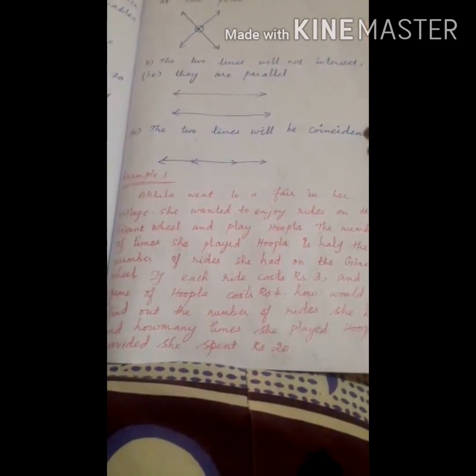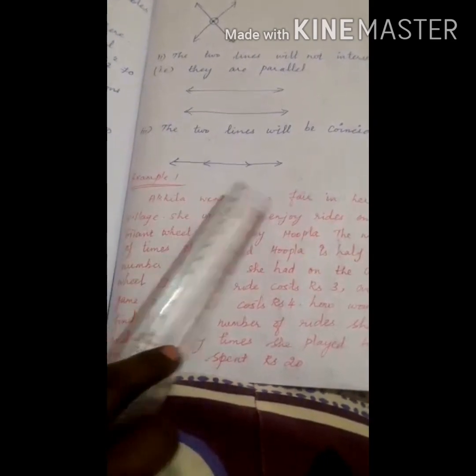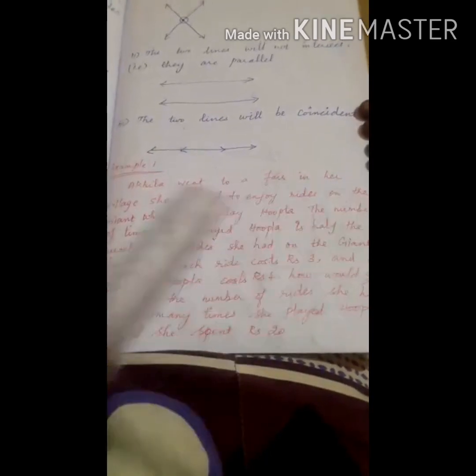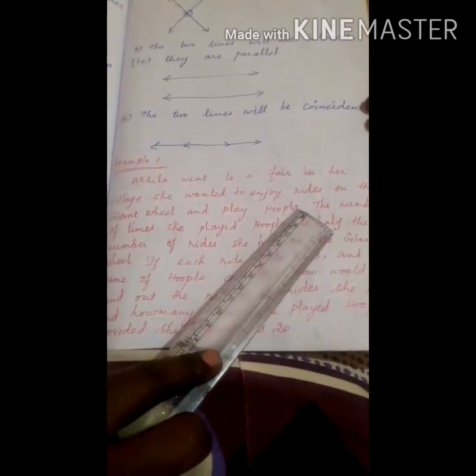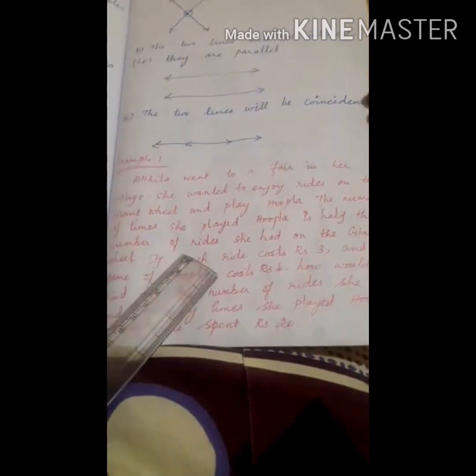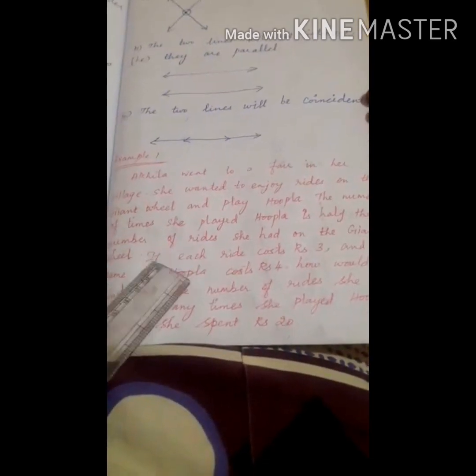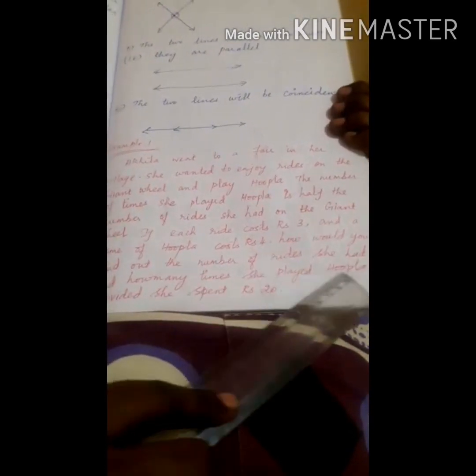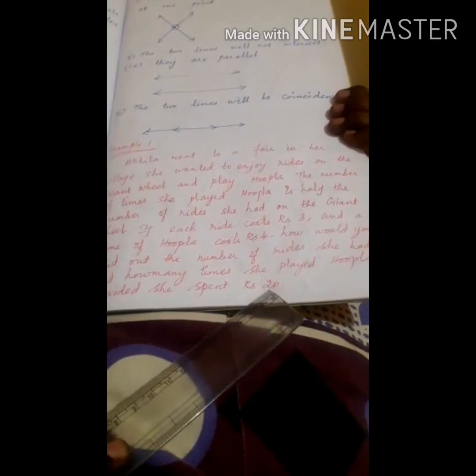Good morning students. Now we are going to see Example 1. Ahila went to a fair in her village. She wanted to enjoy rides on the giant wheel and play hoopla. The number of times she played hoopla is half the number of rides she had on the giant wheel. If each ride cost rupees 3 and a game of hoopla cost rupees 4, how would you find out the number of rides she had and how many times she played hoopla, provided she spent rupees 20?